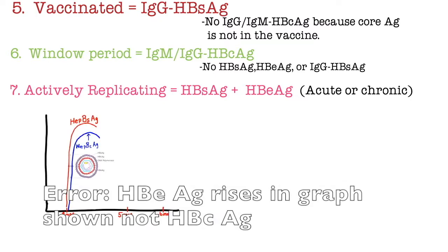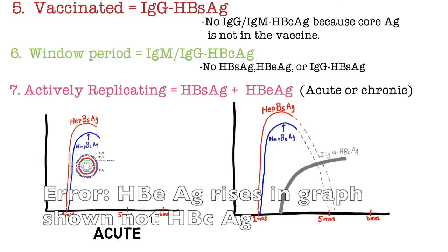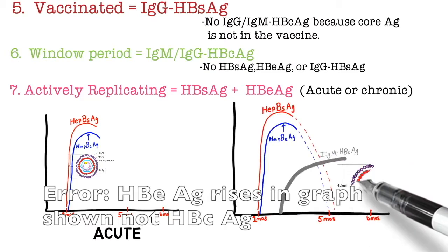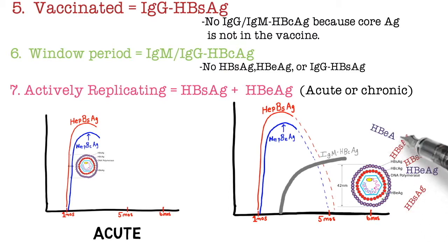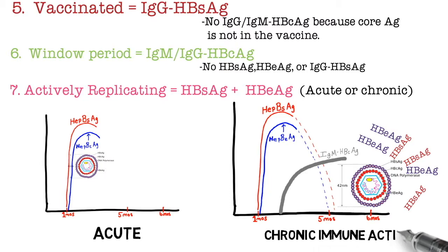In an acute infection, hepatitis B surface antigen and hepatitis B E antigen both rise — note that the bottom marker is hepatitis B E antigen, not core. Chronically, if the virus wins, hepatitis B surface antigen and typically hepatitis B E antigen are both being produced; this is chronic immune active phase.